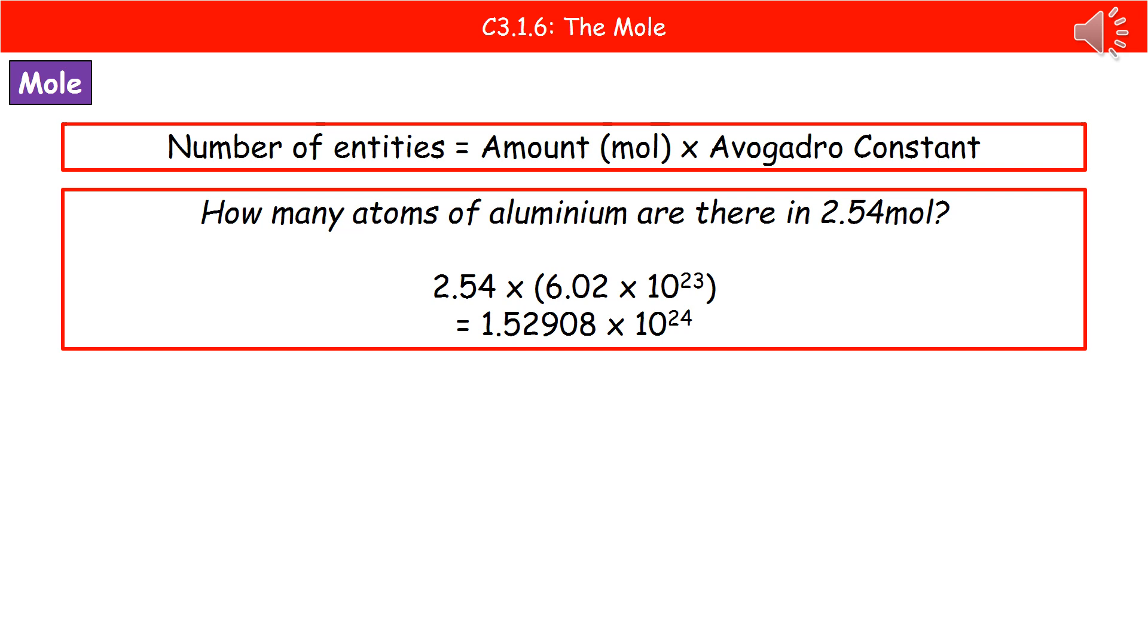You could get something as simple as asking you how many atoms of aluminium are there in 2.54 moles. So obviously the atoms are the entities, so all it's asking us to do here is work out the number of entities of aluminium in 2.54 moles of it.